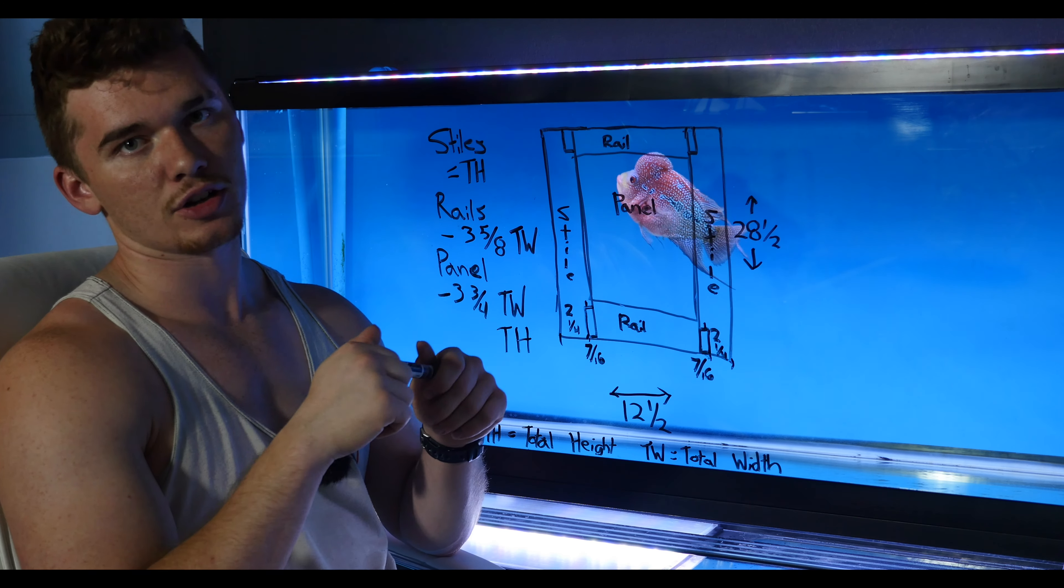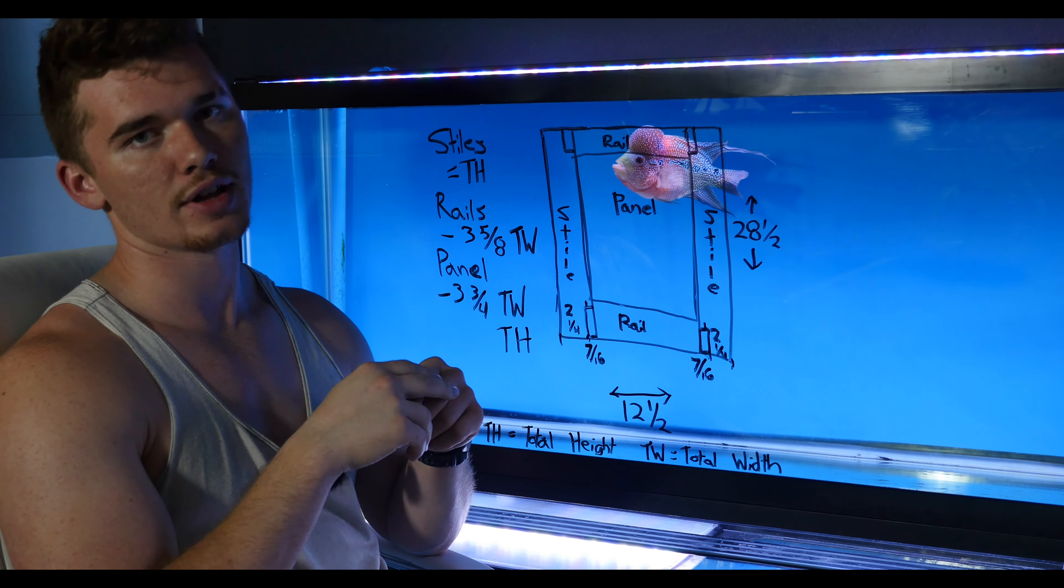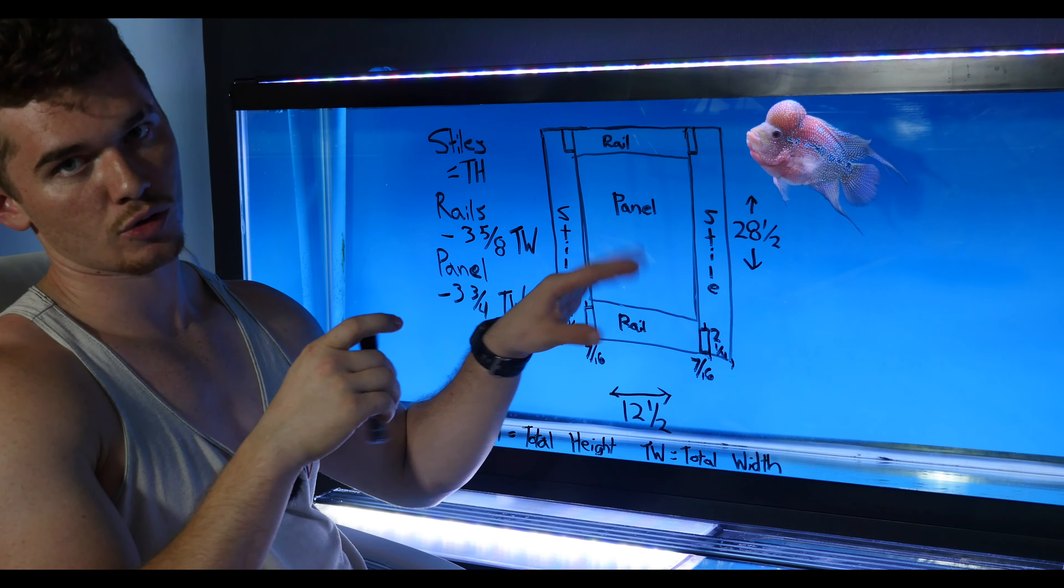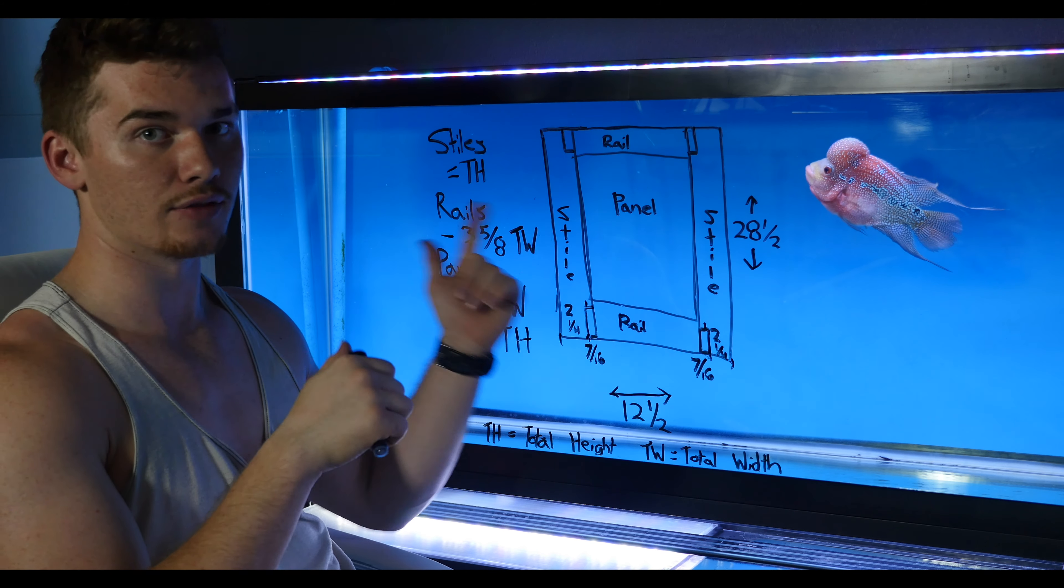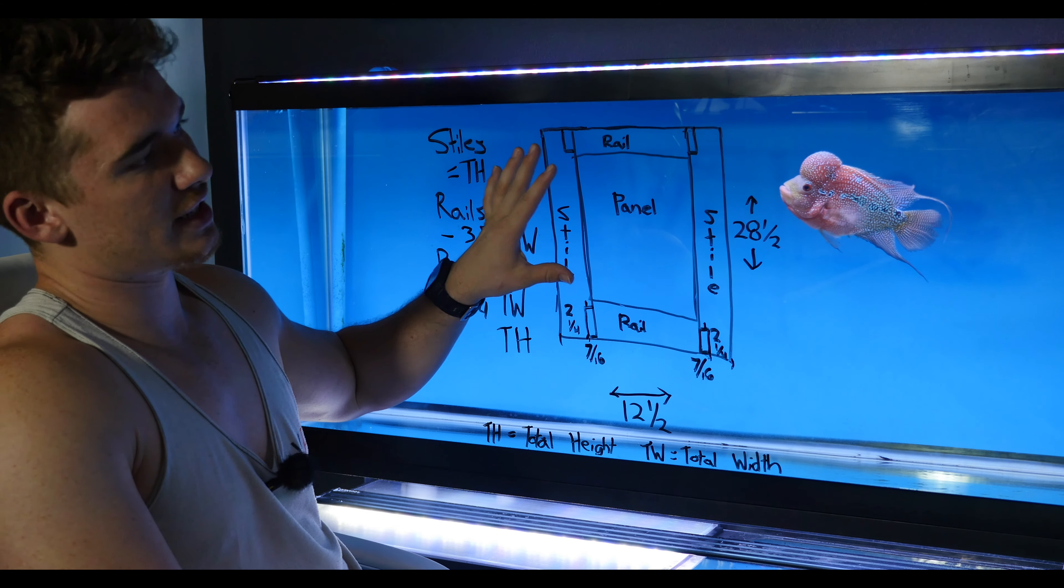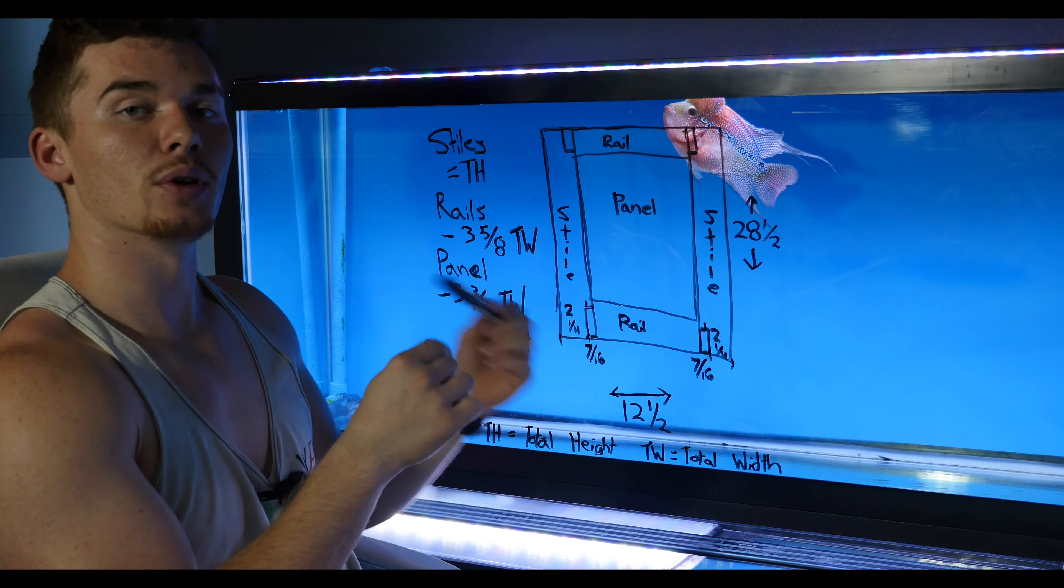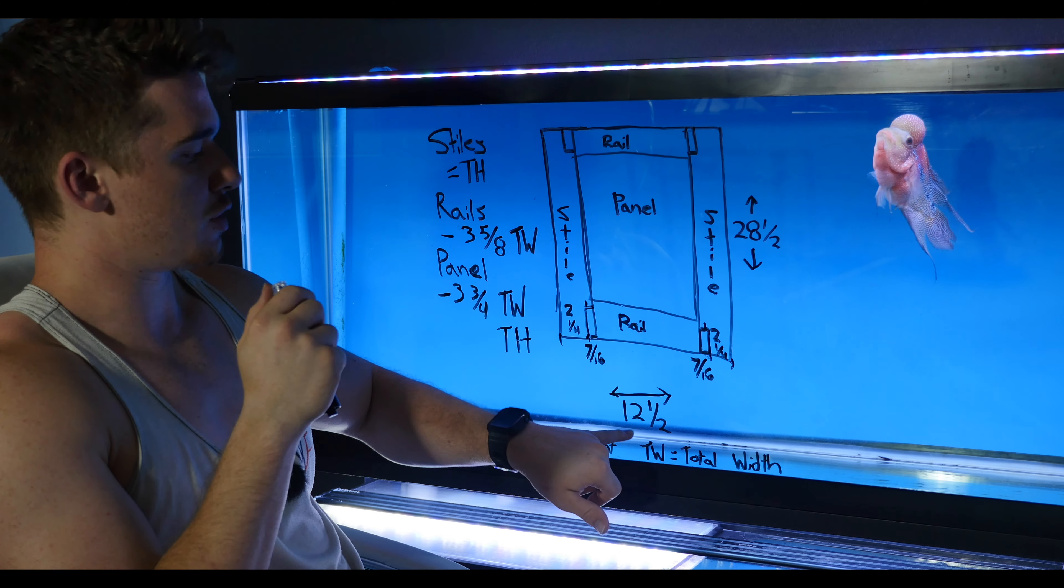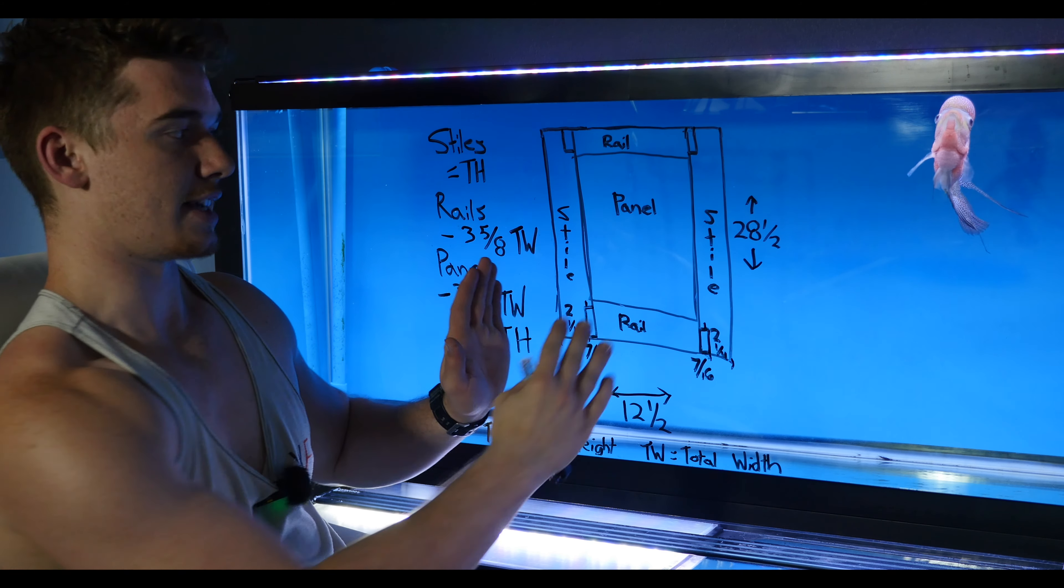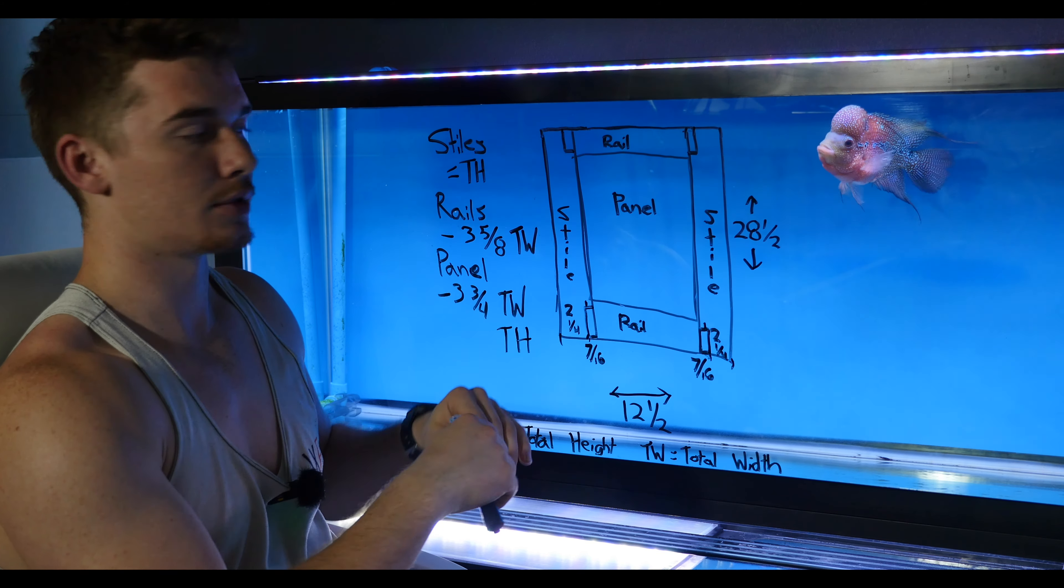Alright, so once you have your opening, you can then figure out your overlay, which if you don't know how to do that, I'll make another video on it. But for this door, we're going to do a half of an inch overlay all four ways. So up, down, left, right. So it was twenty-seven and a half by eleven and a half. With our half-inch overlay, it would make our door twenty-eight and a half by twelve and a half. Okay? Because it has to overlay the opening.